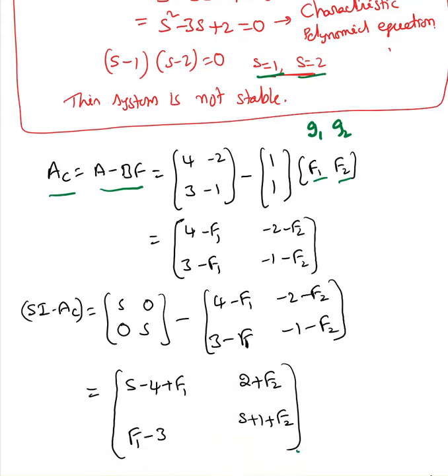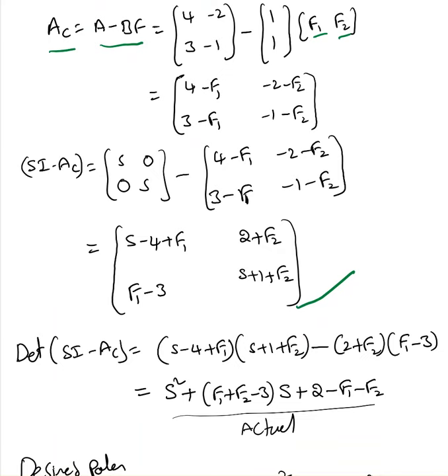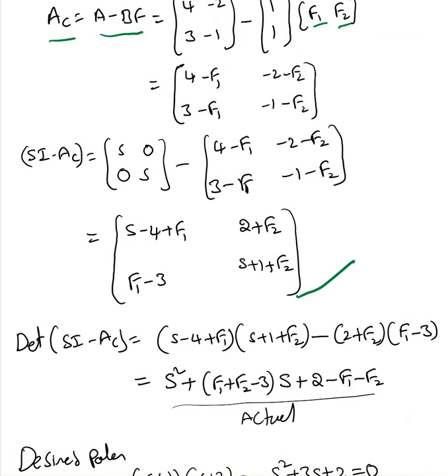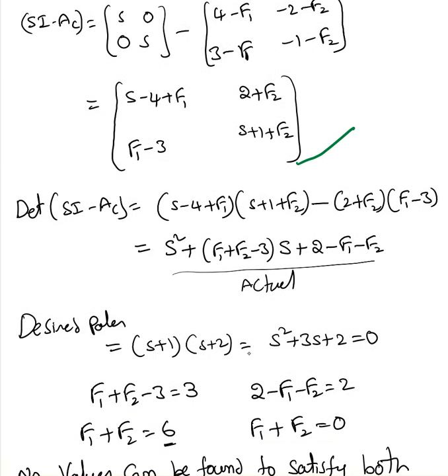SI minus AC, I found this SI minus AC matrix. Now, I found the determinant of SI minus AC. So, determinant of SI minus AC equal to I end up with S square plus F1 plus F2 minus 3 times S plus 2 minus F2. This is the actual characteristic polynomial equation from the given system. Now, we know that the desired poles are S plus 1 and S plus 2. So, I end up with S square plus 3S plus 2.